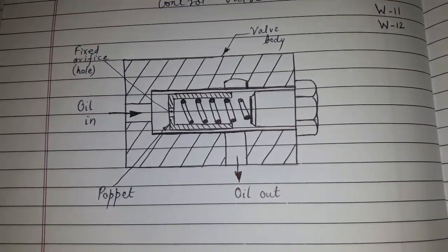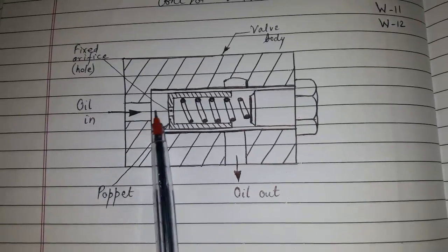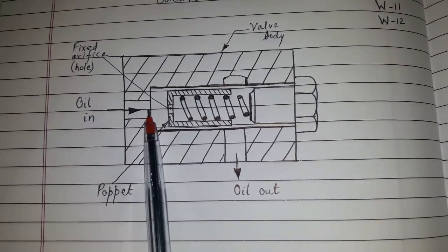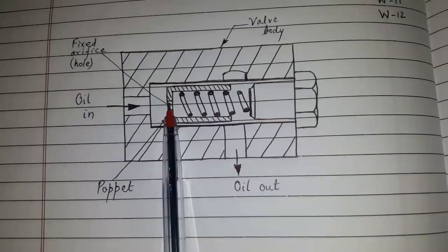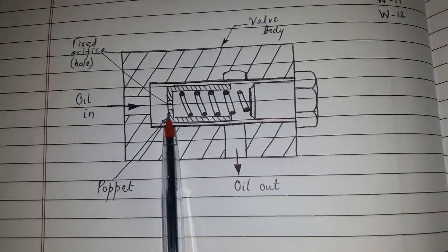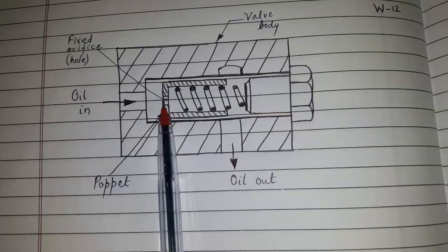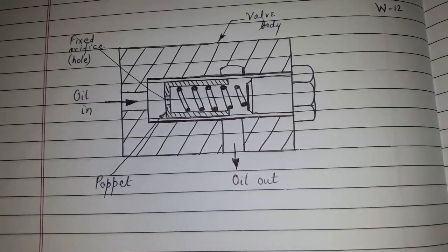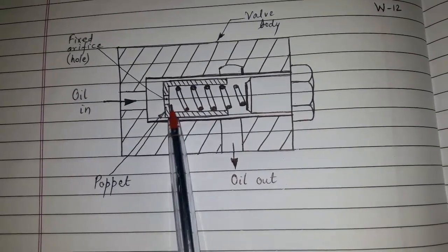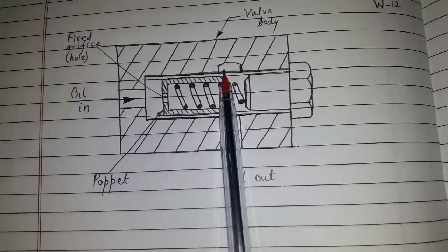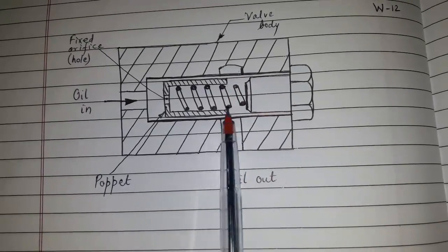Regarding the working, pressurized oil entering through the inlet port will apply full force on the bottom of the poppet and will try to compress the spring by shifting the poppet to the right. The poppet will move to the right and will close the outlet port.